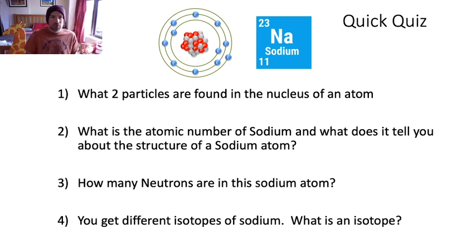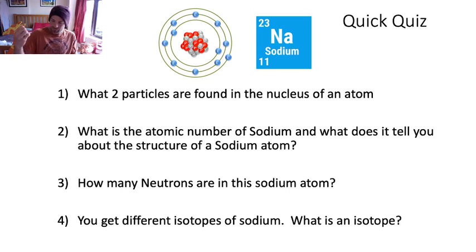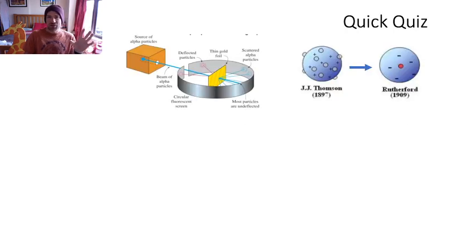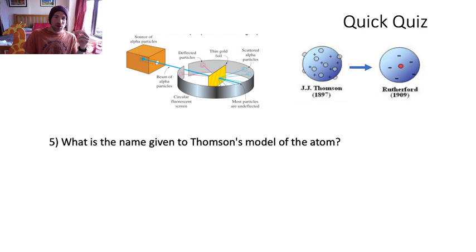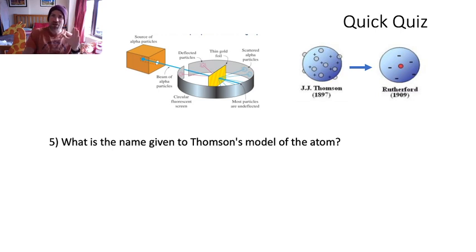These next questions are about Rutherford's alpha particle scattering experiment and how we developed the model of the nucleus. The drawing of the sodium atom on your screen - we didn't always think atoms were like that. We only found out that model after Rutherford did his famous experiment, which we talked about last Thursday. Question five: what is the name given to Thompson's model of the atom? You can see a picture - a blue positive ball with some grey dots in it.